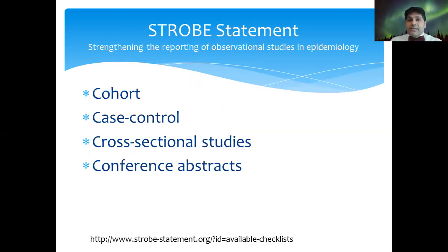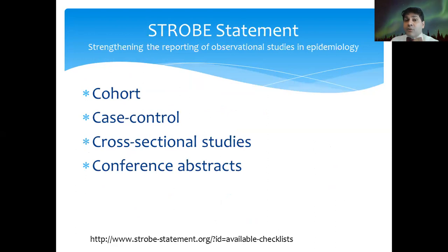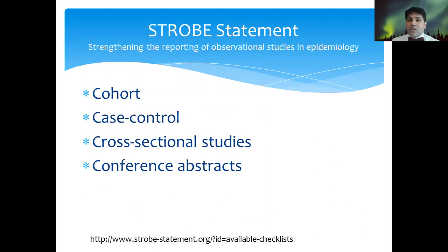The STROBE statement stands for Strengthening the Reporting of Observational Studies in Epidemiology. I'm bringing it up because most of the time you will be involved in observational studies. Randomized control trials take time, require money, and require years of planning. You may not be involved in an RCT as your first paper. So cohort studies — retrospective or prospective — case control studies, cross-sectional studies, and conference abstracts all follow these same principles.